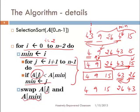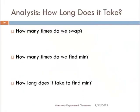Now let us look at how long it takes for selection sort to sort an array — the time complexity of selection sort. How many times do we swap? After each swap operation, one element comes to its correct position and will never move again. So at the end, we will have done the swap exactly n minus 1 times, because you don't need to swap the last element. The n minus 1 swaps put all elements in sorted order. For each swap, we find the minimum once, so that is also done n minus 1 times.